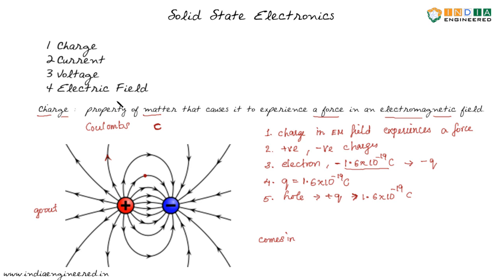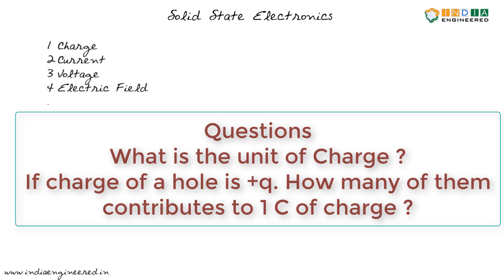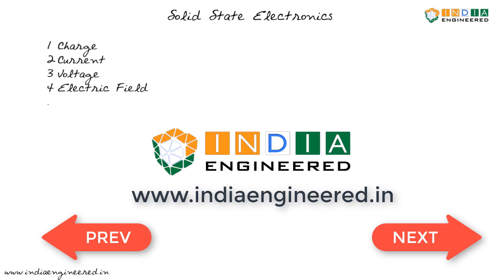Quick summary: Charge is the property of matter that causes it to experience a force in an electromagnetic field. We have positive and negative charges. The charge of an electron is minus 1.6 into 10 power minus 19 coulombs, and we use small letter q for 1.6 into 10 power minus 19 coulombs. The charge of a hole is positive 1.6 into 10 power minus 19 coulombs. Next, we will see what is current. Practice questions: What is the unit of charge? And if the charge of a hole is plus q, how many holes contribute to 1 coulomb of charge?